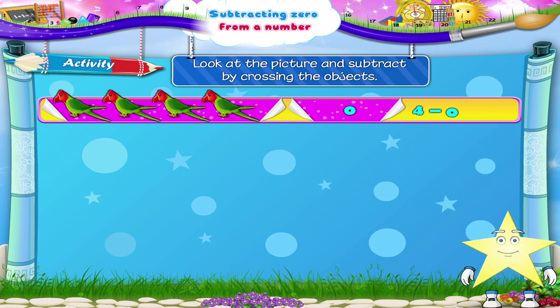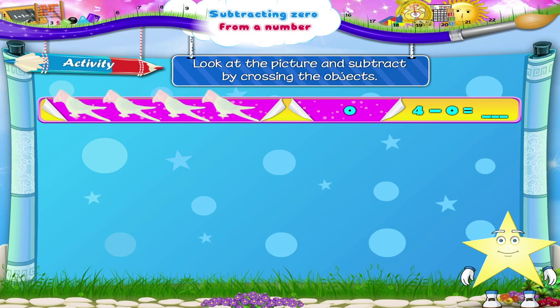Four minus zero is equal to blank. One, two, three, four. Four parrots. We have to cross out zero parrots. That means crossing out nothing. So, four minus zero is equal to four.